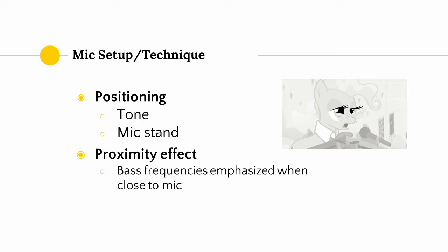Another factor to consider in mic positioning is something called the proximity effect — more pronounced on condenser microphones than dynamics. Basically, the closer you get to your mic, the more the bass frequencies are emphasized. During the recording of this video series, I've been exploiting the proximity effect heavily. However, there is a caveat: the closer you are to your microphone, the more it's going to pick up weird noises from your mouth. Things like popping, sibilance, and mouth clicks are much more prominent when you're up close to your microphone than if you're further away.